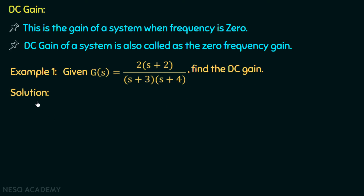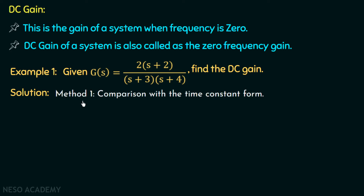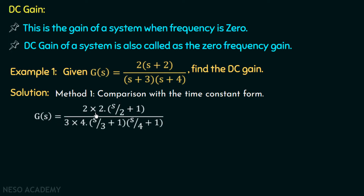We have two methods to find out the DC gain of this system. Method number one is comparison with the time constant form. If we convert this transfer function to its standard time constant form, we can find out the DC gain by comparing. In order to convert this transfer function, we need to take 2 common in the numerator, 3 common from this denominator term, and 4 common from this term. So we will have G(s) equal to 2 multiplied with 2 multiplied with (s/2 plus 1) over 3 multiplied with 4 multiplied with (s/3 plus 1) multiplied with (s/4 plus 1).